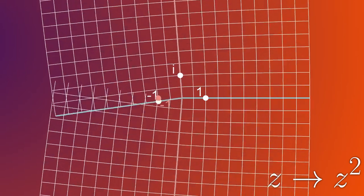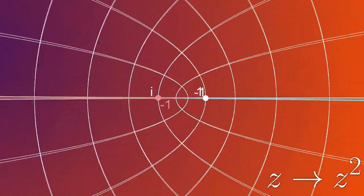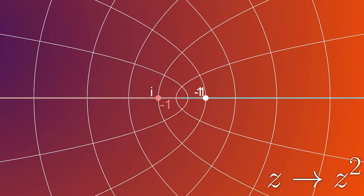Since we're squaring the grid, the point 1 should move to 1 squared, which is still 1, so it will remain in place. i squared is, by definition, negative 1, so it should make its way down to negative 1, and negative 1 will move to negative 1 squared, which is 1.